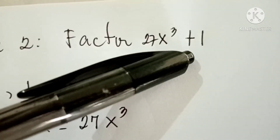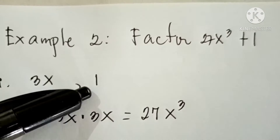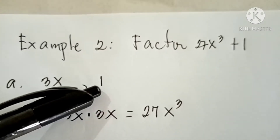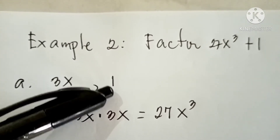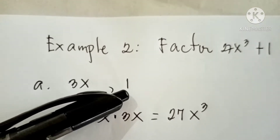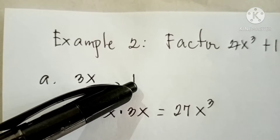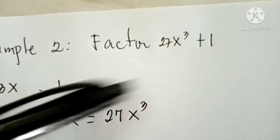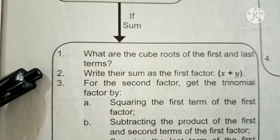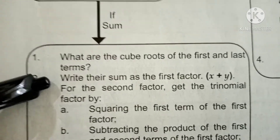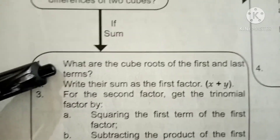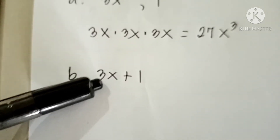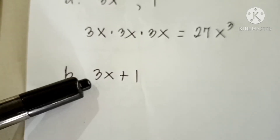How about the second term? What is the cube root of 1? It is 1, because 1 times 1 times 1 equals 1. So the cube root of 1 is 1. For step 2, write their sum as the first factor — simply add the cube roots of the first and last terms. The result of step 2 is 3x plus 1.